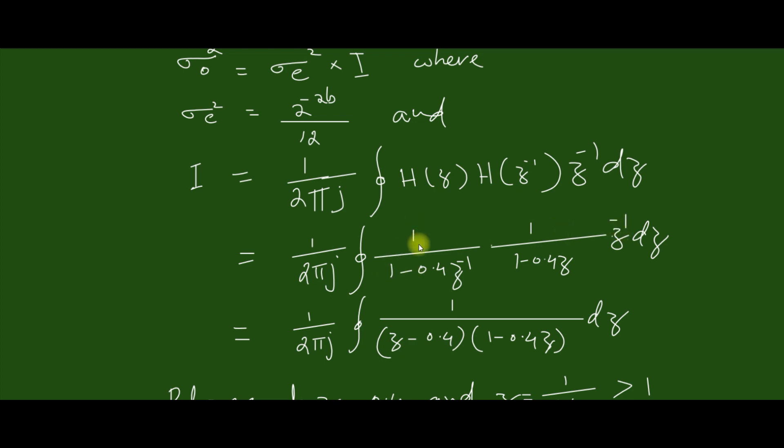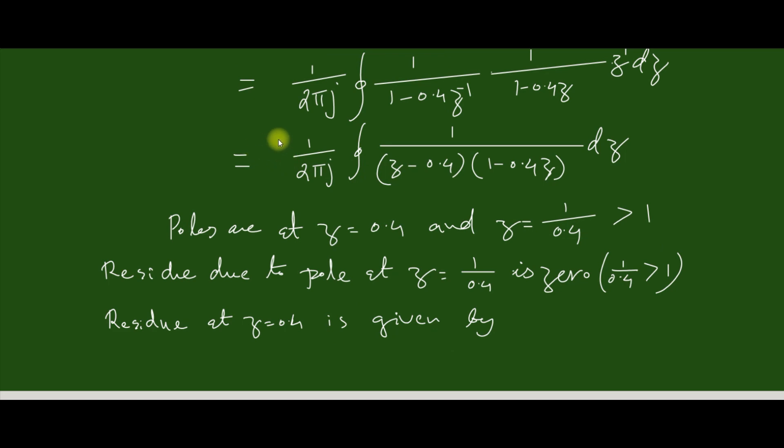When it is multiplied it will become z minus 0.4. Its value is computed by the sum of residues inside the unit circle. In our case we can see that the poles are at z = 0.4 and z = 1/0.4. Since 1/0.4 is greater than 1, the residue due to pole at z = 0.4.